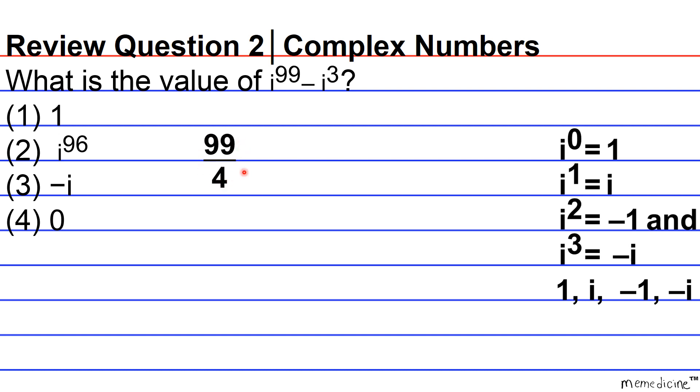And we get that 99 divided by 4 is going to be equivalent to 24 remainder 3. So, previously I said that we raised the base i to the remainder, and i to the third is going to be equivalent to negative i. So i to the 99th is equivalent to i raised to 3, which is also equivalent to negative i.